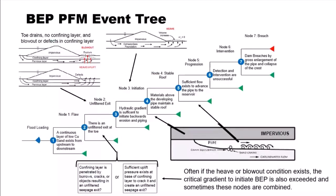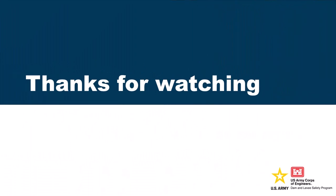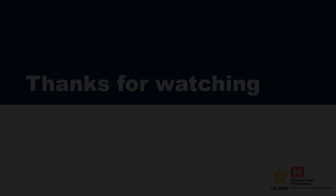This is the event tree we'll use for the risk assessment, which will be tomorrow, not today. It's a pretty standard BEP: continuous layer of low-cu sand exists from upstream to downstream, unfiltered exit at the toe, hydraulic gradient sufficient to initiate backwards erosion piping, materials above the developing pipe maintain a stable roof, sufficient flow exists to advance the pipe to the reservoir, and detection and intervention are unsuccessful leading to breach.